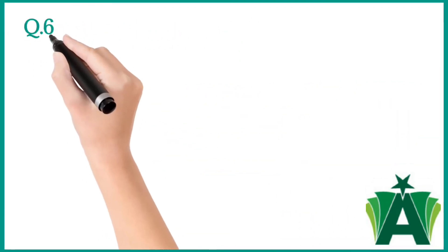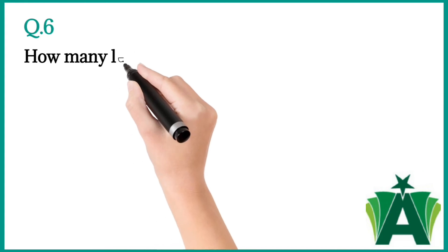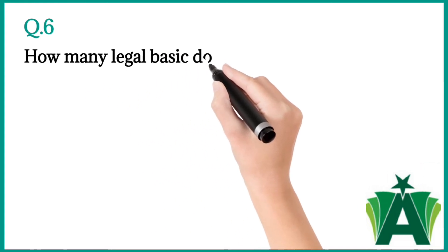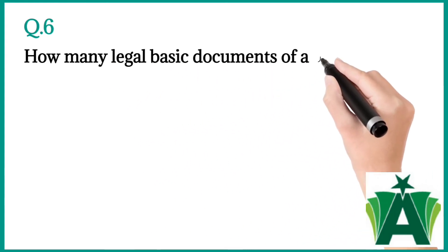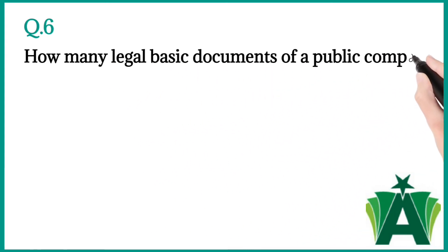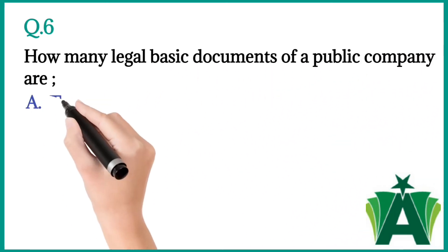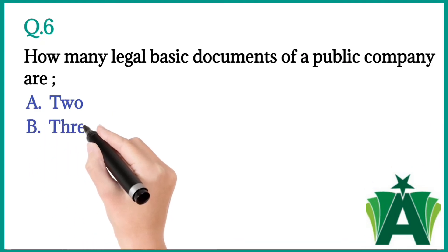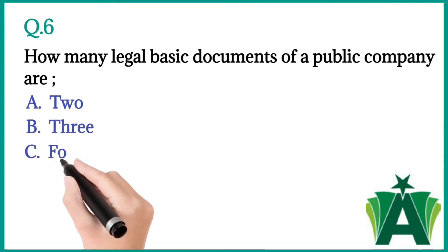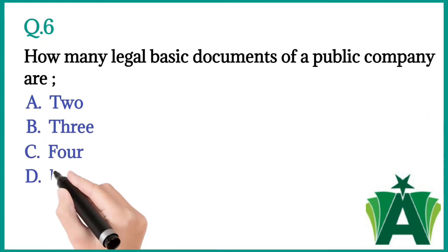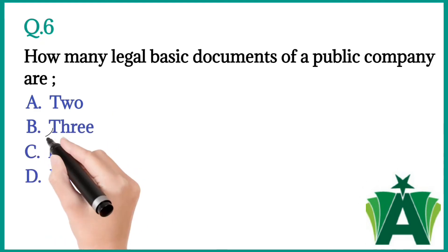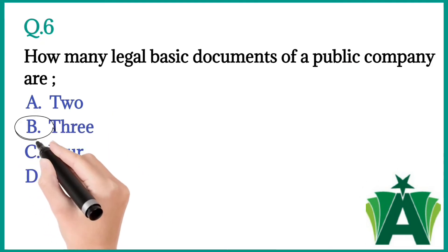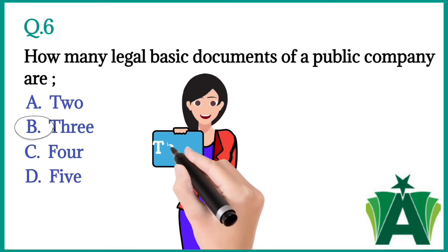Question number six: How many legal basic documents does a public company have — a) Two, b) Three, c) Four, d) Five. The correct answer is b) Three.